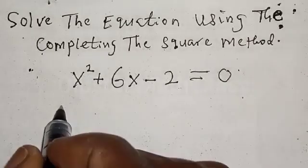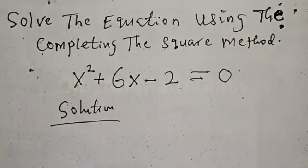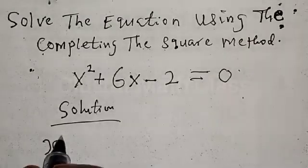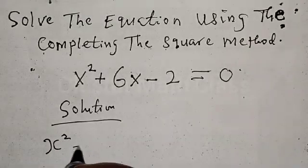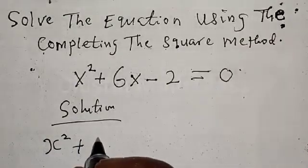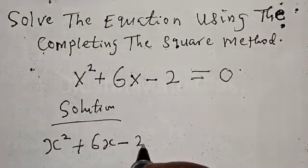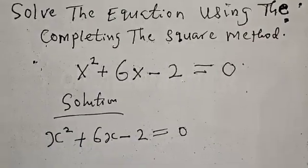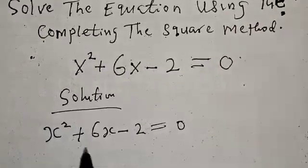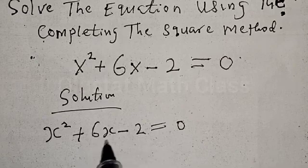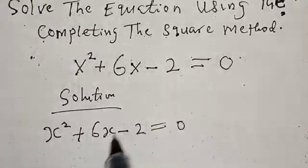Solution. We have x² + 6x - 2 = 0. In solving this equation, we would have used the factorization method, but this equation is not easy to factorize. That is why we have to use the completing the square method.